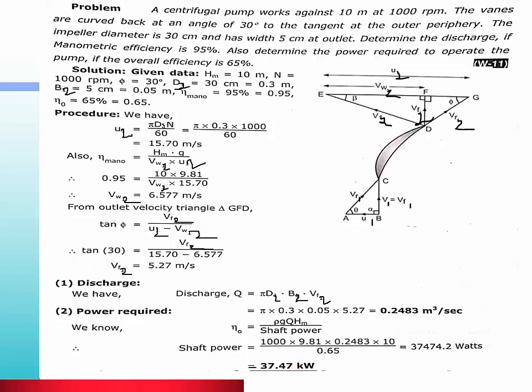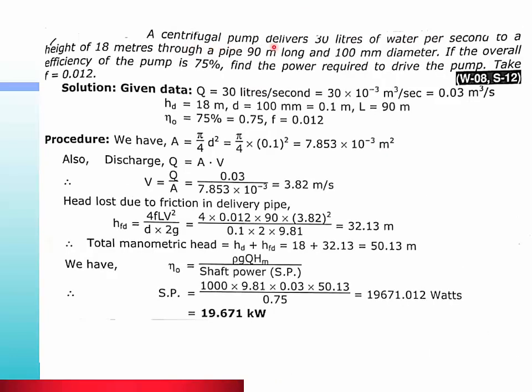Second problem: A centrifugal pump delivers 30 liters of water per second to a height of 18 meters. The pipe is 90 meters long and 100 mm diameter. If the overall efficiency of pump is 75%, find the power required to drive the pump. Take friction factor f = 0.012.